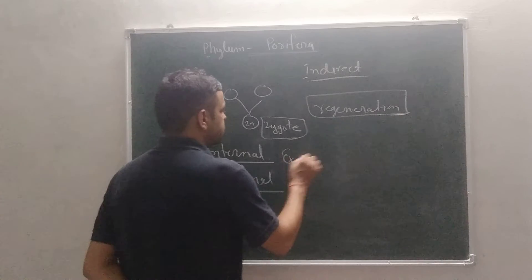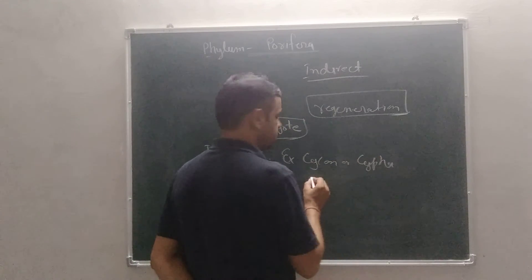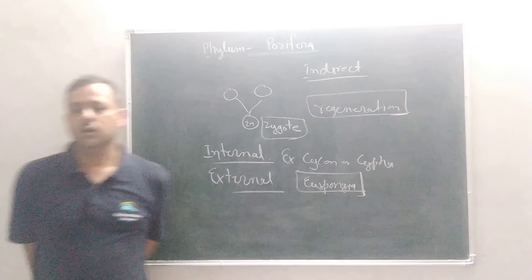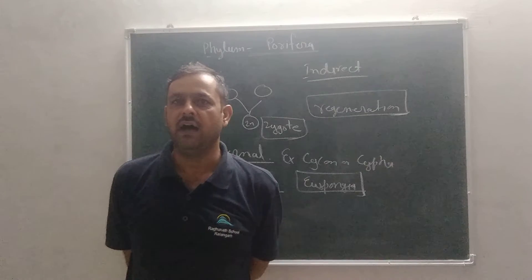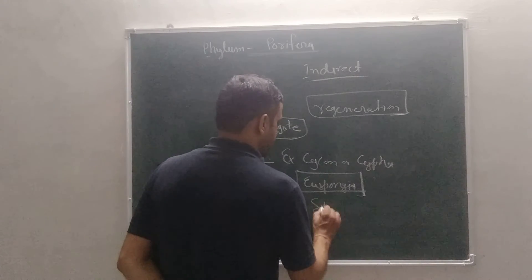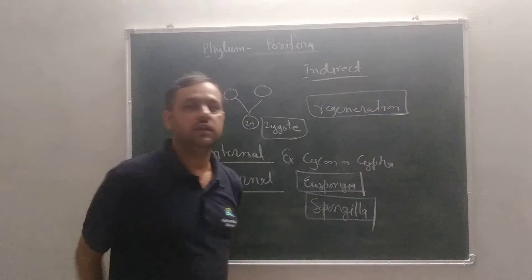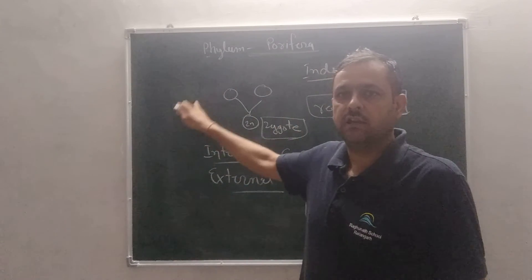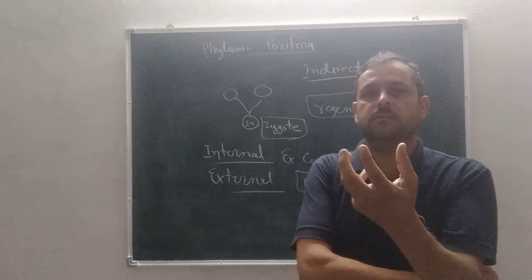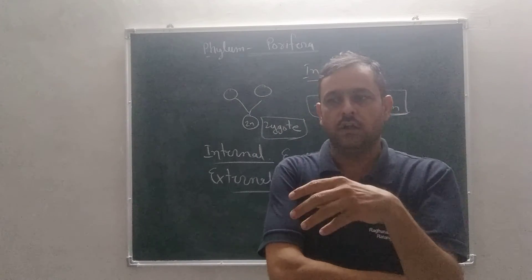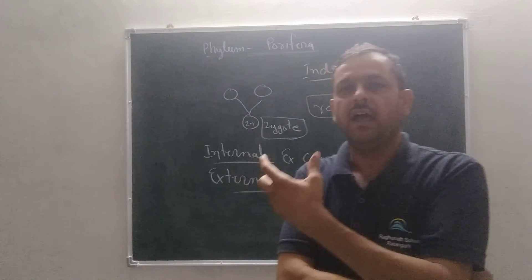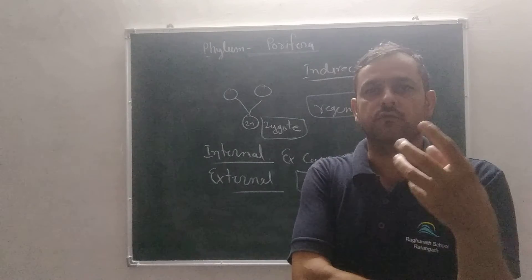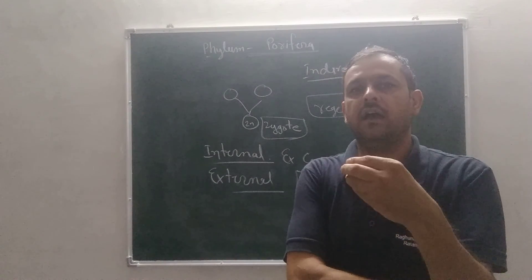Now, examples. Sycon or Scypha. Next, Euspongia. Euspongia is also called bath sponge. And now, Spongilla. Spongilla is the organism which is found in fresh water. We discussed earlier the character of Porifera. In character we studied that the maximum number of organisms of Porifera are found in marine water. You have to remember this is the exception. And examiners always ask the exception. So Spongilla is found in a fresh water environment. This is a particular exception example.